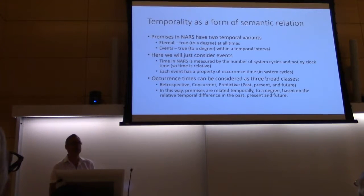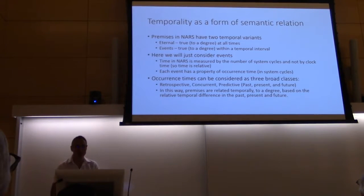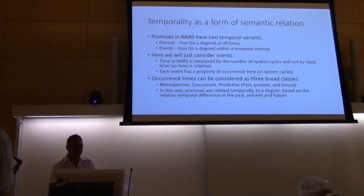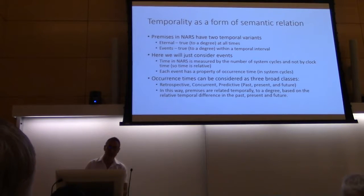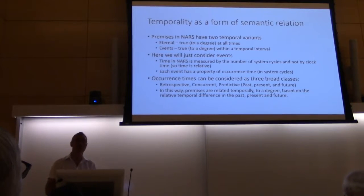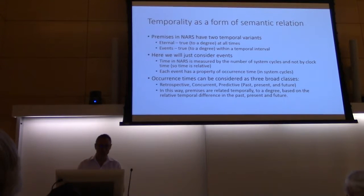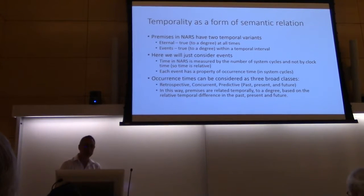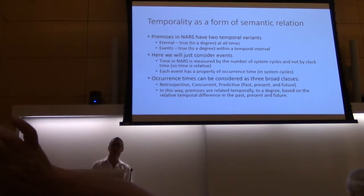Time in NARS is not world time. It's measured by the number of system cycles and not by clock time, so time is relative or subjective. Each event in the system has a property which we call occurrence time — that is, the interval when it will occur. Occurrence time can be considered in three broad classes: retrospective, concurrent, and predictive, which are essentially fancy words for past, present, and future.